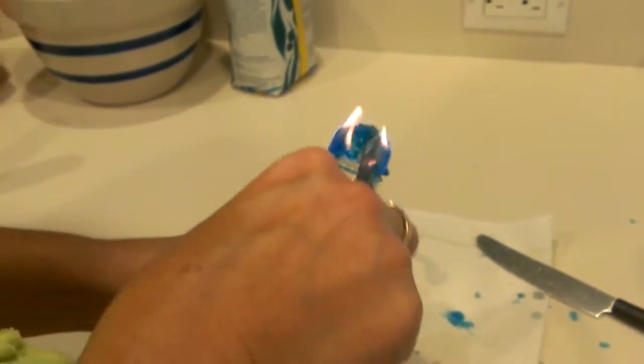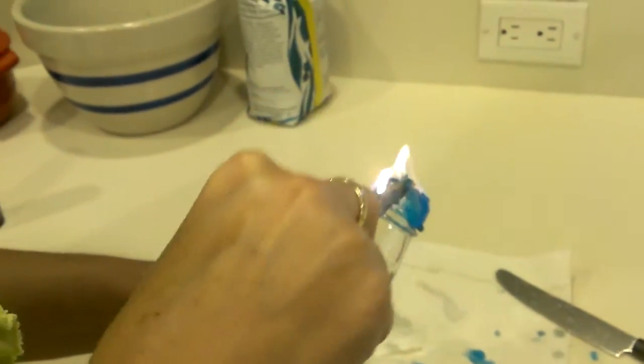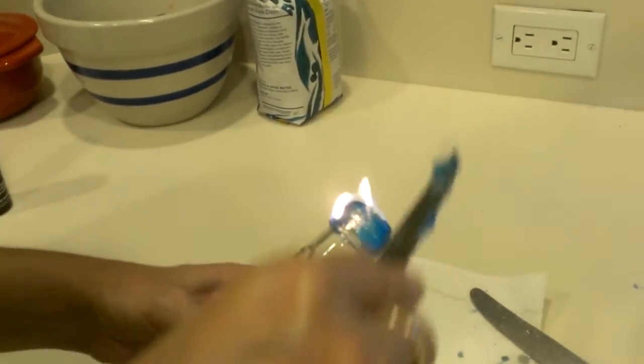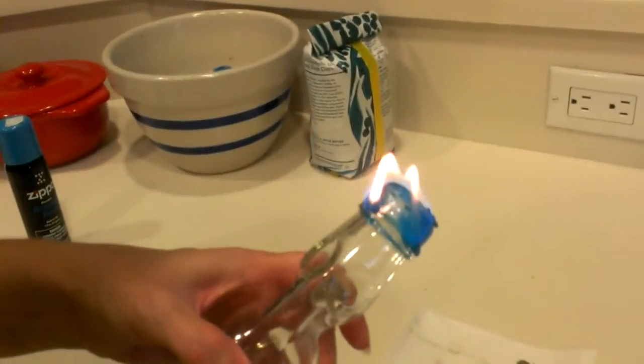And you just keep prying away at this. The trick is once you make a nice divot you want to pry it off but you don't want to set your napkin on fire. So now you have to blow out the torch.